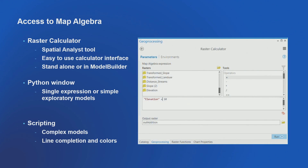Ways to get to map algebra: the raster calculator is pretty popular. There's a nuance — elevation plus 10 would actually work even without casting the raster string because it's smart enough as a geoprocessing tool. You could cast it and it works fine too. The Python window is right inside Pro, and most of our work is in a Python script itself.